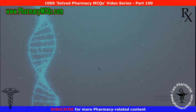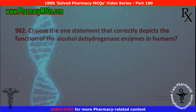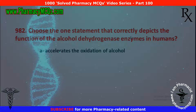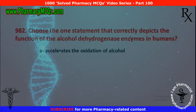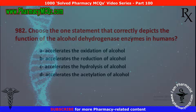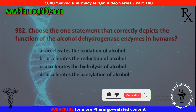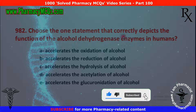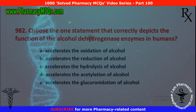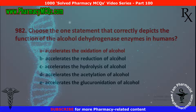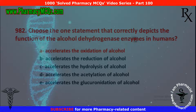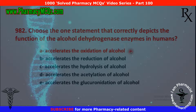Next MCQ: choose the one statement that correctly depicts the function of the alcohol dehydrogenase enzymes in humans. Options include: accelerates the oxidation of alcohol, accelerates the reduction of alcohol, accelerates the hydrolysis of alcohol, accelerates the acetylation of alcohol, or acetylates the glucuronidation of alcohol. The correct option is accelerates the oxidation of alcohol — the function of alcohol dehydrogenase enzymes in humans is to accelerate the oxidation of alcohol.